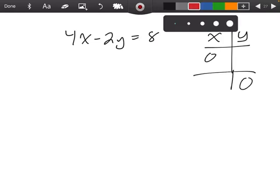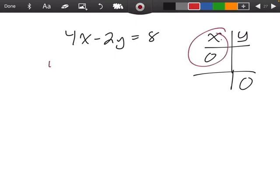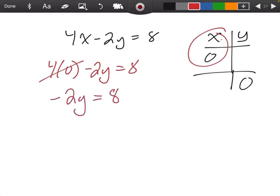So remember, what this means is that the first time, everywhere we have the letter x, we're going to put a 0. So we're going to go 4 times 0 minus 2y equals 8. So 4 times 0 is just 0. So now we're left with negative 2y is equal to 8. So to get y by itself, I'm going to divide both sides by negative 2.